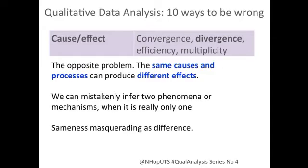The opposite of convergence is divergence — that the same causal process may produce different effects. Where we see difference in the world, we don't necessarily have grounds to assume difference in causal processes or mechanisms. We might mistakenly say that there are two phenomena or mechanisms in play when really there's only one, and the difference is produced by something else, not by the causal mechanism. So we could have sameness masquerading as difference.